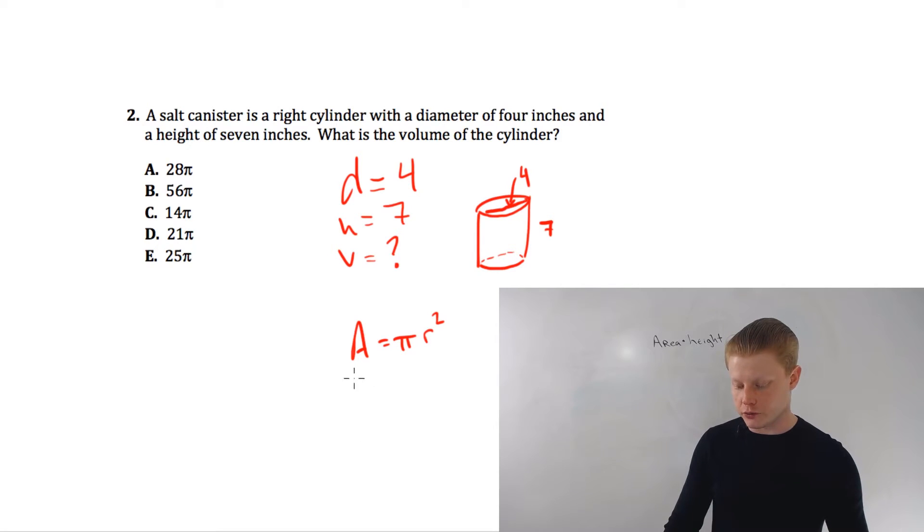And what trap number one is, they gave you diameter, so we want to go ahead and half that. π times 2 squared, so the area is equal to 4π, right?